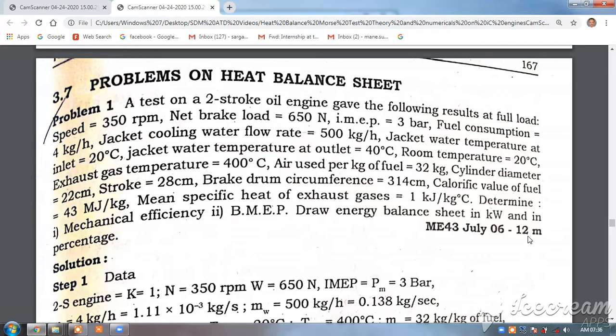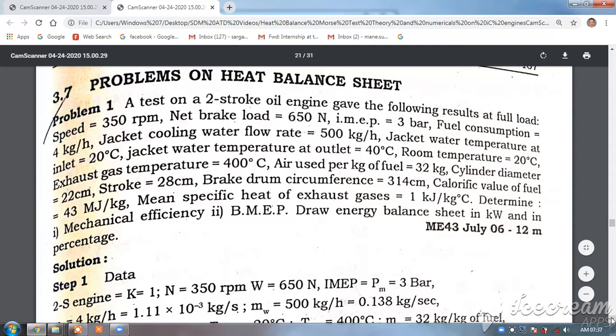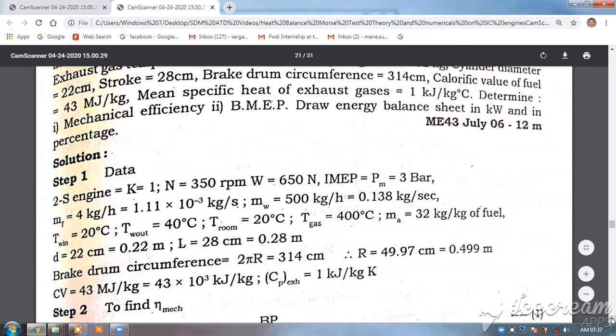Determine mechanical efficiency, brake mean effective pressure, and draw heat balance sheet in kilowatt and in percentage. So kilowatt means it is in kilojoules per second as well as in percentage. Very simple problem, though it looks big, it is very simple to solve.